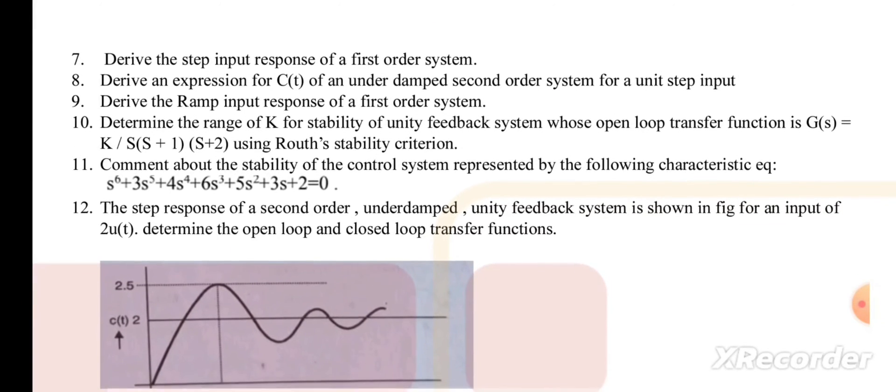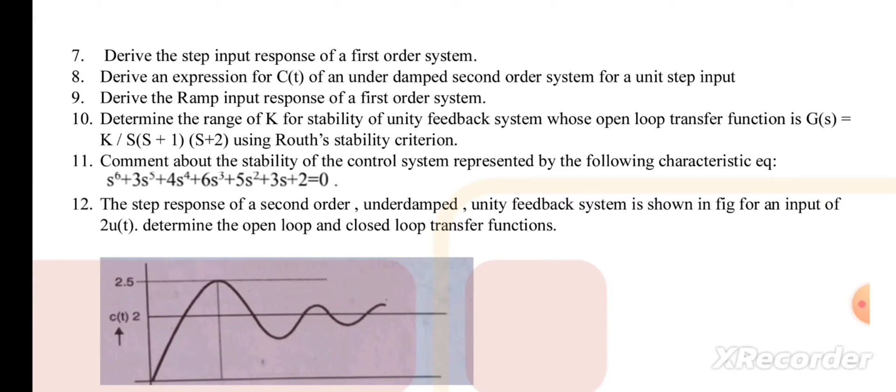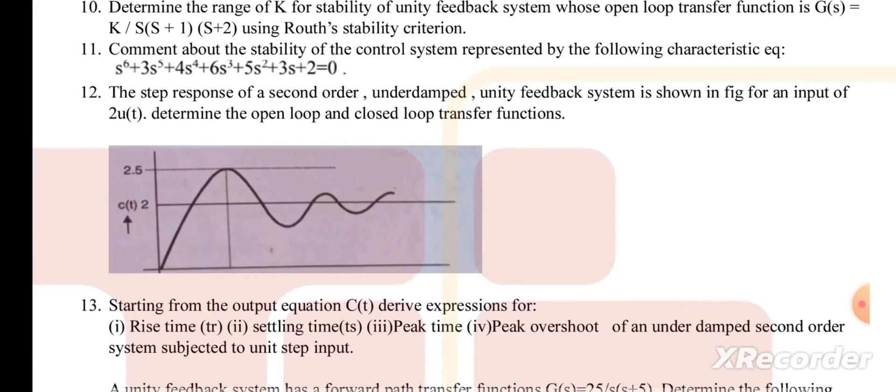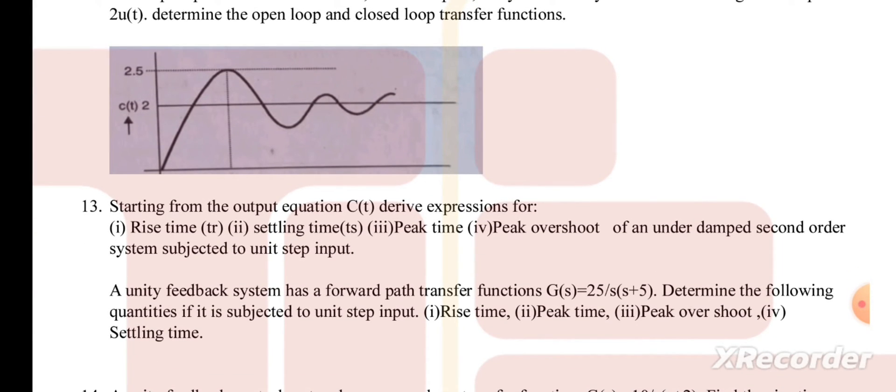And comment about the stability of the control system represented by the following characteristic equation given. And the step response of a second order under-damped unity feedback system is shown in the figure for an input of 2u(t), determine the open loop and closed loop transfer functions. So this is the kind of question you may get in module 4.